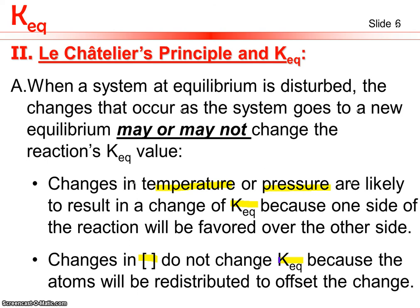For example, if you have an equilibrium expression that comes down to 1 over 2, and you add something so the expression changes to 2 over 4, both equal one half. So KEQ roughly stays the same.